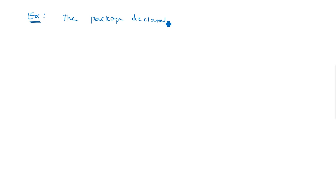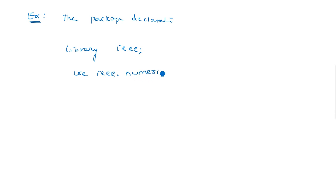Here is an example of a package declaration. We write: library IEEE; use IEEE.numeric_bit.all — so all the functions inside that numeric package will be available. Then we declare: package what_pkg is, and begin writing the package contents.